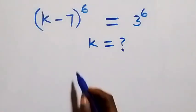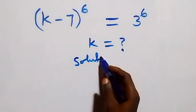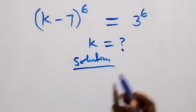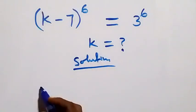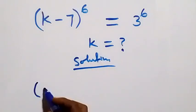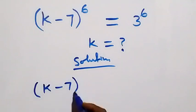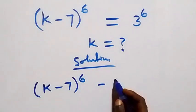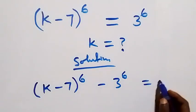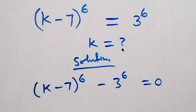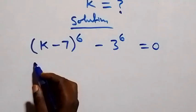Hello, welcome. How to solve this nice exponential equation. Taking 3 raised to power 6 to the left-hand side, this becomes k minus 7 raised to power 6 minus 3 raised to power 6 equals zero. From here we can rewrite this.